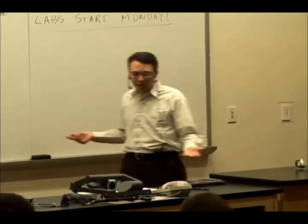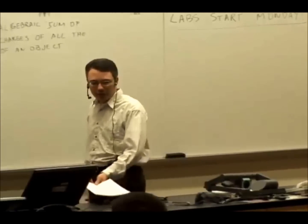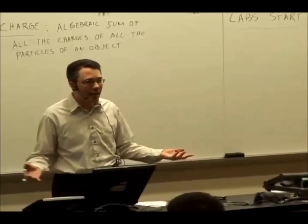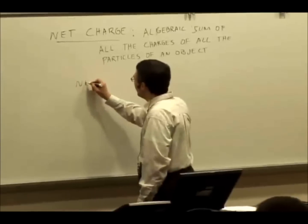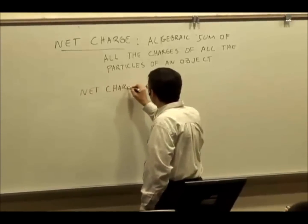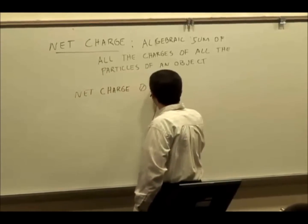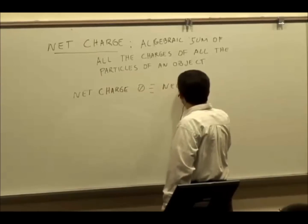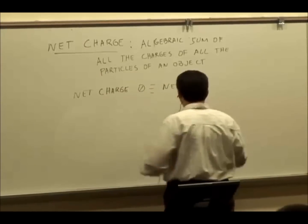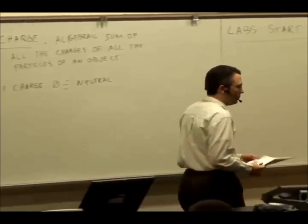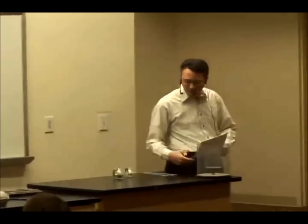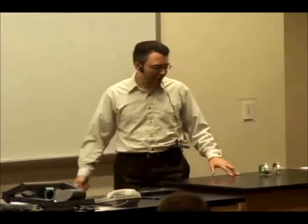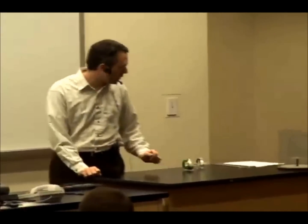In most ordinary matter, the number of protons and number of electrons is the same. So when something has a net charge of zero, we call it neutral. The everyday matter we ordinarily see is usually neutral — this table doesn't have any net positive charge or net negative charge; it has the same number of protons as electrons.